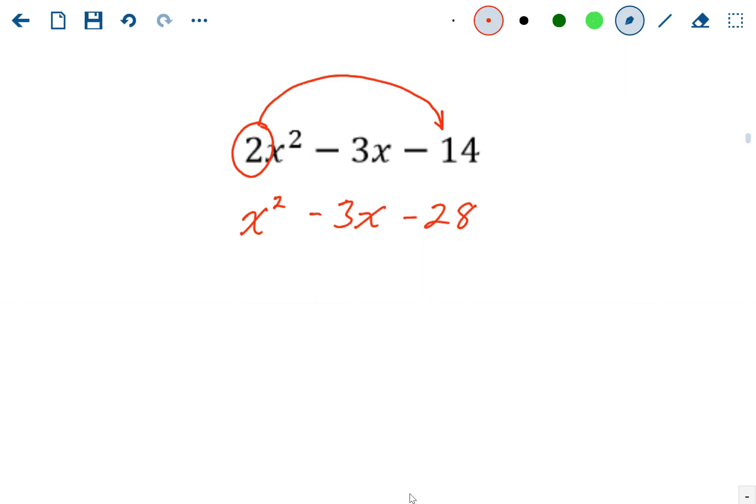So this problem goes from having a leading coefficient of 2 to having a leading coefficient of 1. And whenever you have a leading coefficient of 1, it becomes a lot easier. You could use the product sum. So we need two numbers that are going to multiply to negative 28, product of negative 28, and a sum of negative 3.